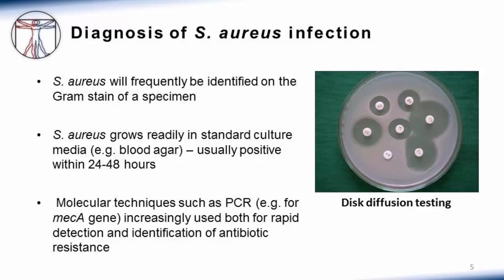When you send a clinical specimen to the microbiology lab — whether a sputum, wound culture, or surgical specimen — staph aureus may frequently be identified on the gram stain. The technologist will see gram positive cocci in clusters. Even if not seen on the initial gram stain, staph aureus usually grows readily in standard culture media such as blood agar, turning positive within the first 24 to 48 hours. The picture on this slide shows the disk diffusion testing method for antibiotic susceptibility, with a lawn of staph aureus and antibiotic-impregnated discs.